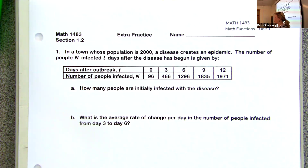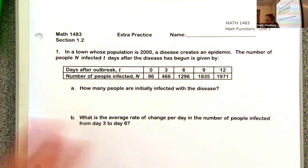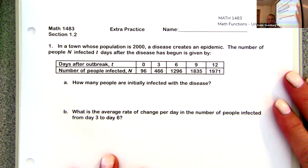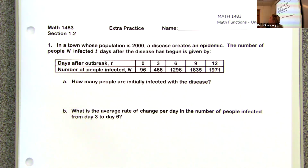This is section 1.2 extra practice that we needed to complete before we start 1.3. In section 1.2, we're talking about answering questions about a function based upon a table rather than an equation. Section 1.1 was an equation; 1.2 is a table.